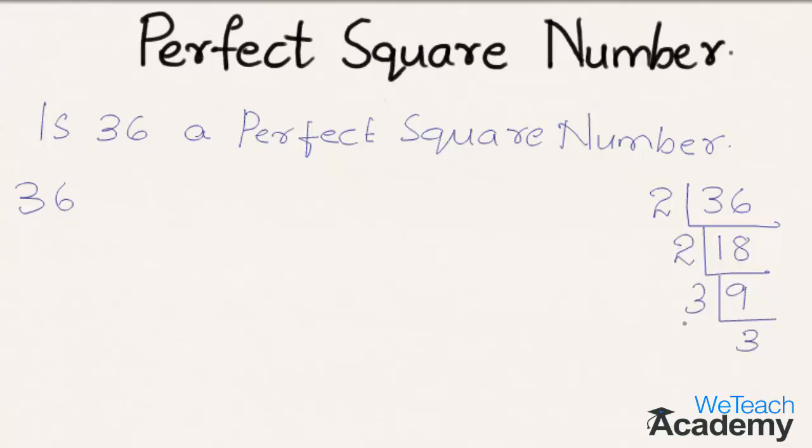So we can write 36 as 2 into 18, that is equal to 2 into 2 into 9, which is equal to 2 into 2 into 3 into 3.